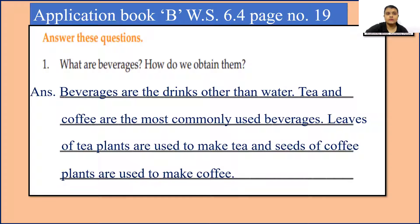Now we will move to the next worksheet, Worksheet 6.4. Question 1: What are beverages? How do we obtain them? Beverages are drinks other than water. Tea and coffee are the most commonly used beverages. Leaves of tea plants are used to make tea, and seeds of coffee plants are used to make coffee.